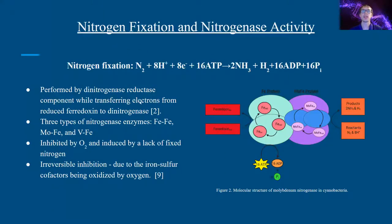Nitrogen fixation is the action of taking atmospheric nitrogen and reducing it to ammonia. This also comes with a byproduct of dihydrogen, which can be collected and used to create hydrogen fuel cells. This reaction is performed by the dinitrogenase reductase component of the nitrogenase enzyme, while the transferring of electrons comes from reduced ferredoxin to the dinitrogenase component.